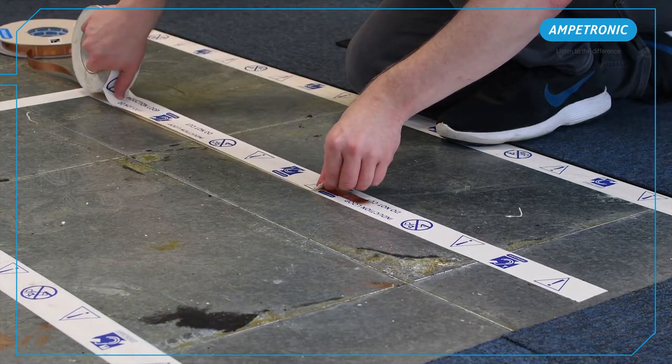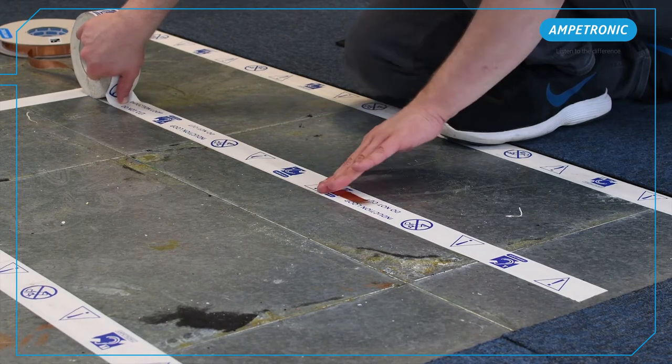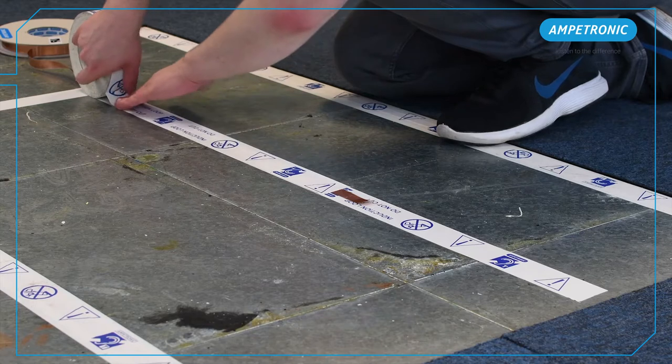The copper has a thin insulation to protect against grounding or shorts where tapes cross, but this can be damaged if care isn't taken during installation.